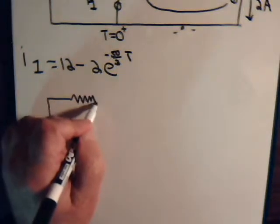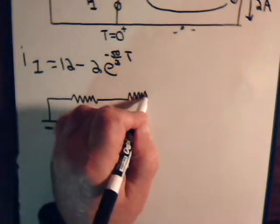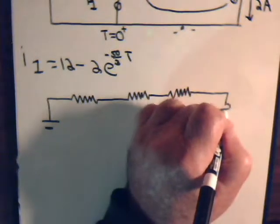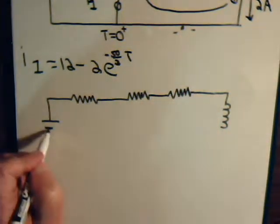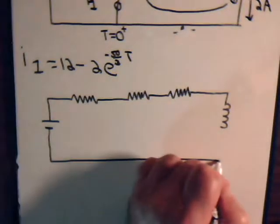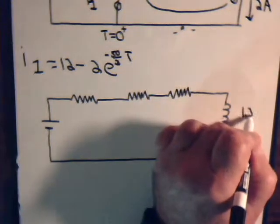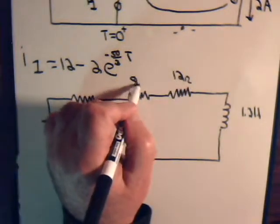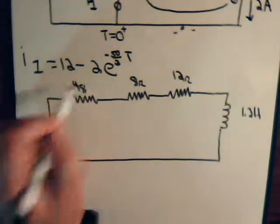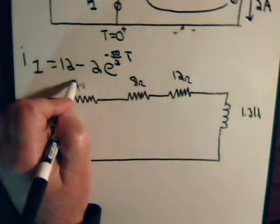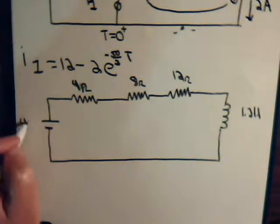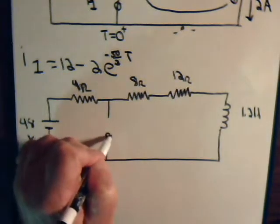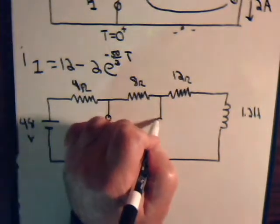So let's just first of all redraw it real fast. So we have the battery, a 4 ohm resistor, and there's an 8 ohm resistor, a 12 ohm resistor, and then the coil. That's 1.2 henries. 12 ohms, 8 ohms, 4 ohms, and a 48 volt battery. Then we have a switch here and a switch here.